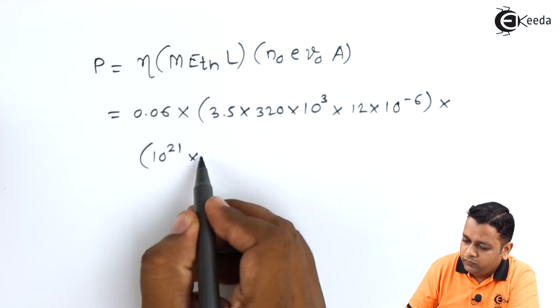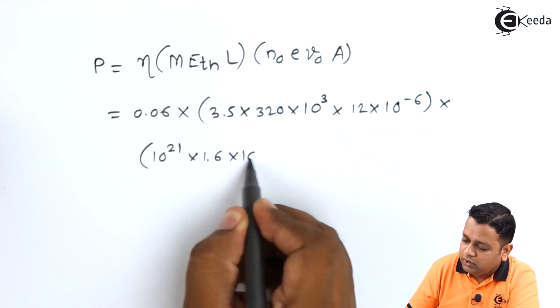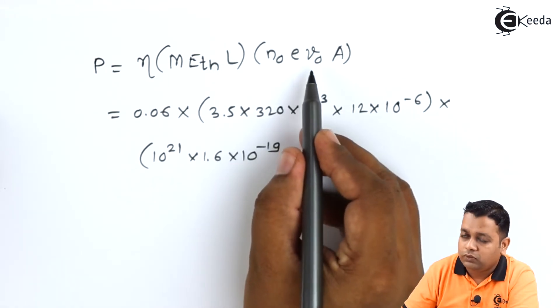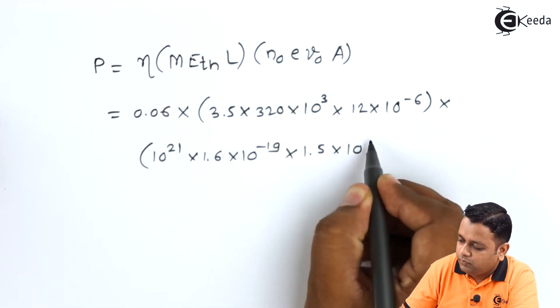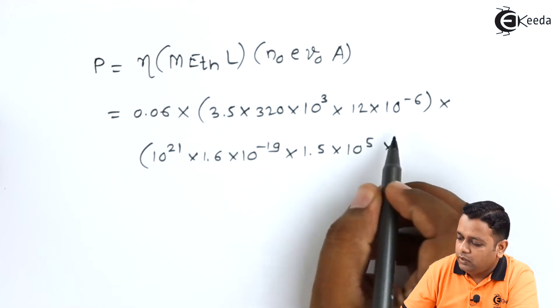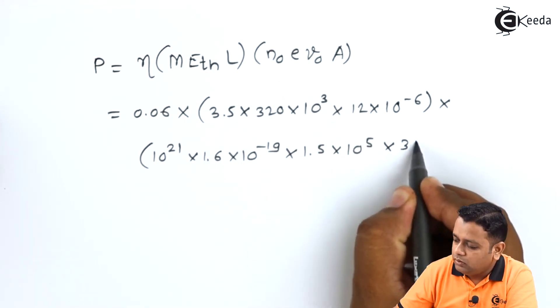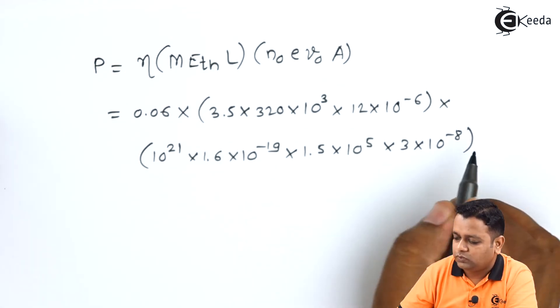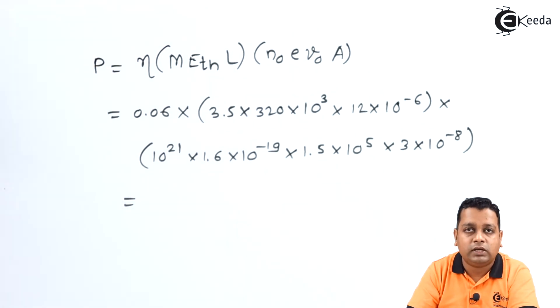The first bracket is in multiplication to the second bracket that has the concentration given as 10 raised to power 21 into the electric charge 1.6 into 10 raised to power minus 19 into the velocity of electron, the velocity is given as 1.5 into 10 raised to power plus 5 into lastly the area 3 into 10 raised to power minus 8 meter square. So thus we have substituted all these 8 parameters.